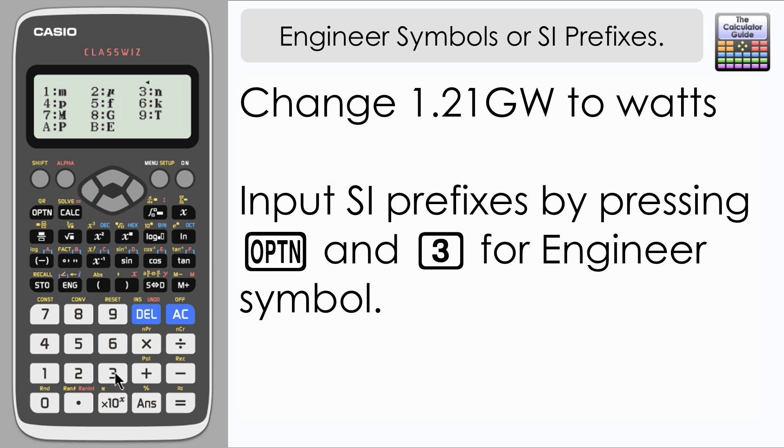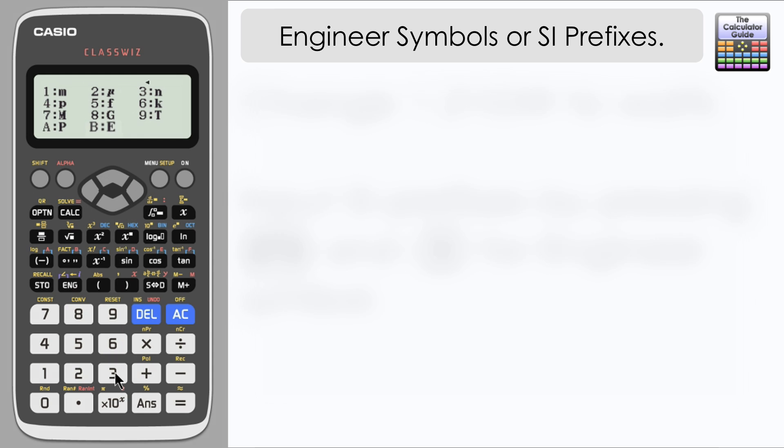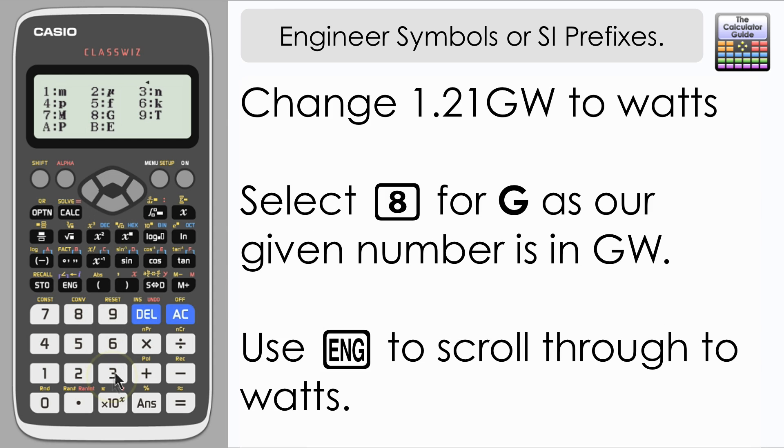Now it does go down as small as femto, which is 10 to the power of minus 15, and it does go as large as capital E, which is exa, which is 10 to the power of 18, so a very big number there. But our question requires this to be gigawatts, so I'm going to press 8 here for capital G.